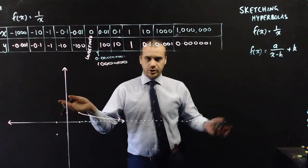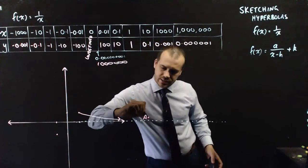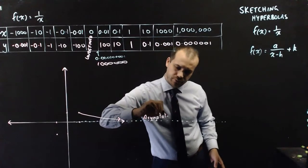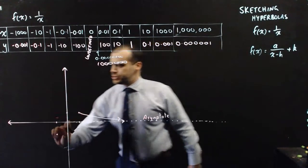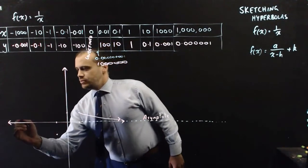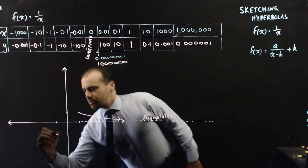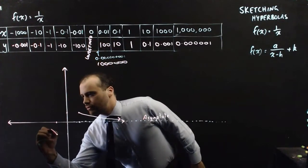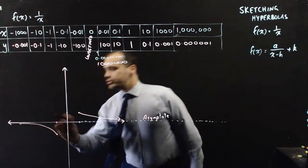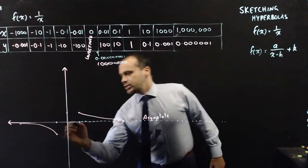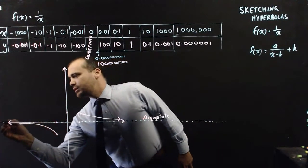This equation is getting closer and closer and closer to this blue line and never, ever touching it — that's an asymptote. We have an asymptote on the other side too. When x is negative 10, we're at negative 0.1, and we get this nice little curve getting closer and closer to the x-axis and never quite touching it. So our asymptote passes all the way through here.